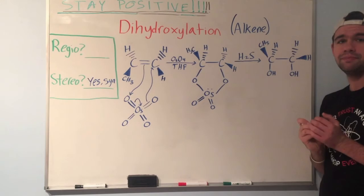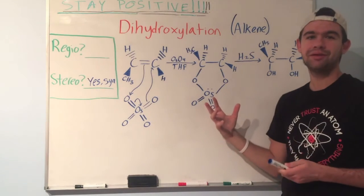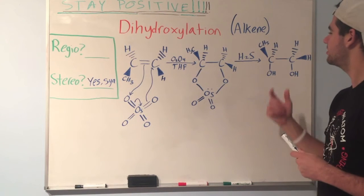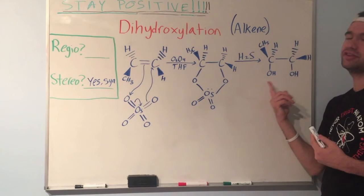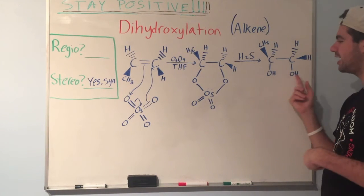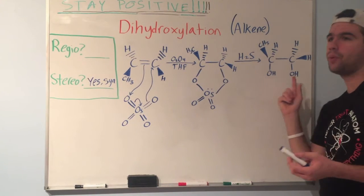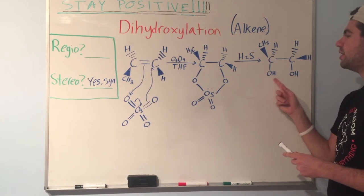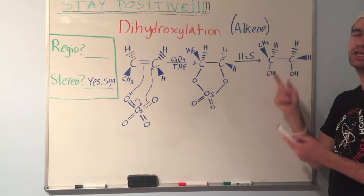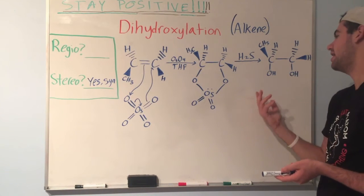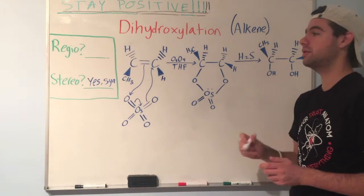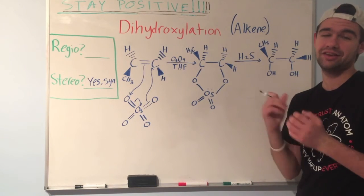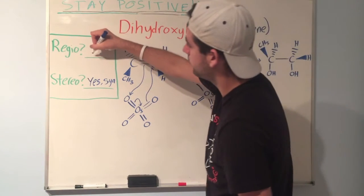In terms of regiospecificity, we encountered a similar problem when we talked about halogenation in the previous video. Technically, any time you add two of the same kind — like two hydroxyl groups — there's no way to tell retrospectively what attacked what and where. Because these are identical and both on adjacent carbons, there's no way to tell if it's regiospecific. So we typically say no — but you want to talk with your teacher about it, as technically it's typically taught that it is not regiospecific.